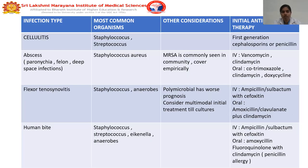The most common infection type is cellulitis, caused by Staphylococcus and Streptococcus. Initial empirical antibiotic therapy is first-generation cephalosporin or penicillin. For paronychia, deep space infection, and felon, which are abscesses commonly caused by Staphylococcus aureus, MRSA is commonly seen in the community. To cover MRSA, we empirically start IV vancomycin, clindamycin, or oral co-trimoxazole, clindamycin, or doxycycline.